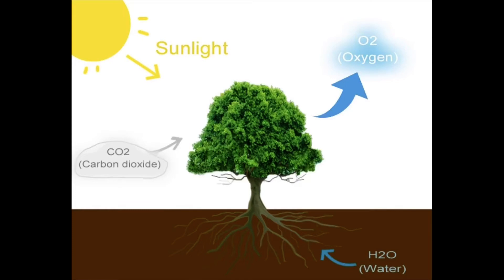That means tree roots help hold the soil and ground in place. Finally, we use trees — or the wood that comes from trees — all over the world for all kinds of things. Can you think of three things that the wood from trees is used for?